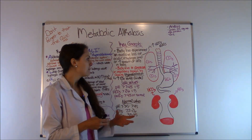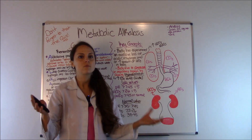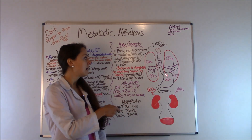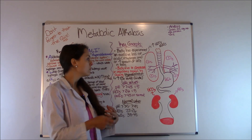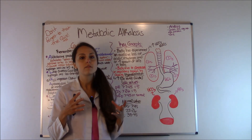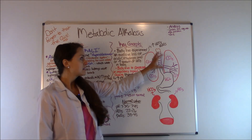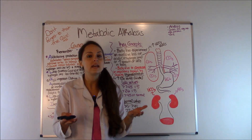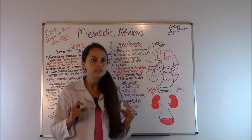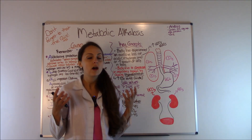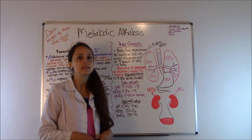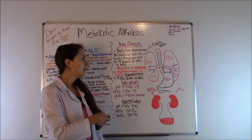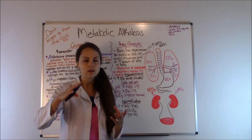When this happens, the body tries to compensate — it needs to get everything back to normal. The lungs kick in and cause hypoventilation because keeping CO2 levels high, which is an acid, will help balance the alkalotic state. So it slows down respirations — hypoventilation — in hopes of retaining CO2, which is acidic. Respirations may drop to less than 12, which should bring bicarb back down to normal.